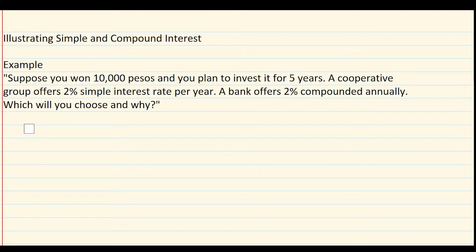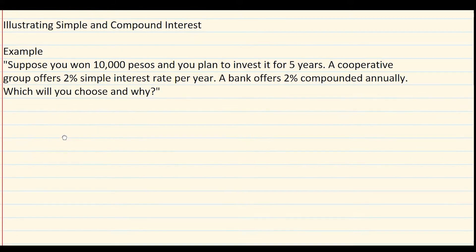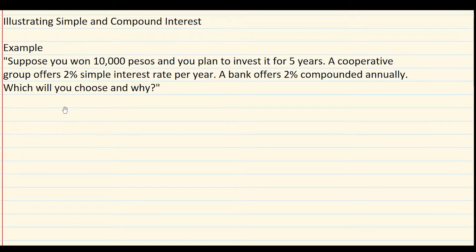Hello guys, what's up! This is Teacher Nikoi, and today we will discuss illustrating simple and compound interest. We have an example: suppose you won 10,000 pesos and you plan to invest it for five years. A cooperative group offers 2% simple interest rate per year; a bank offers 2% compounded annually. Which will you choose and why?